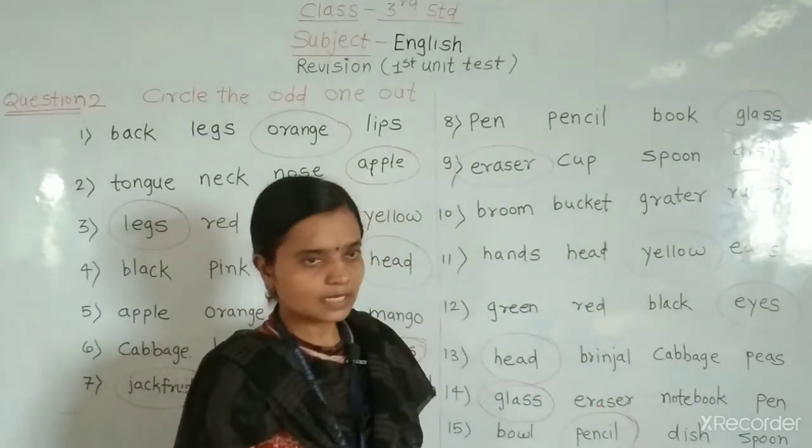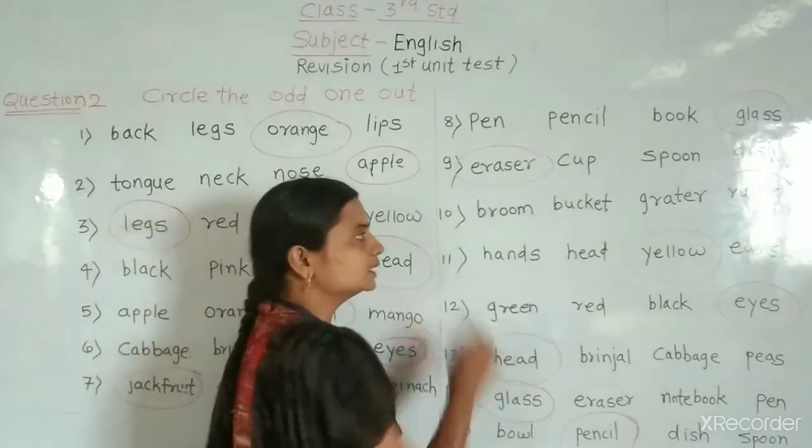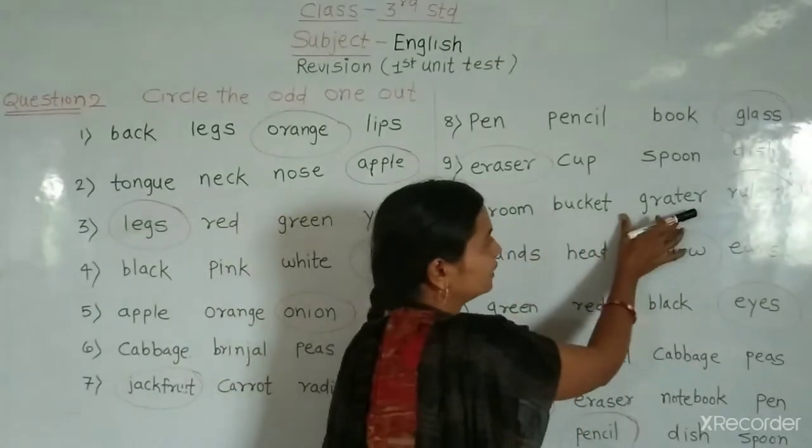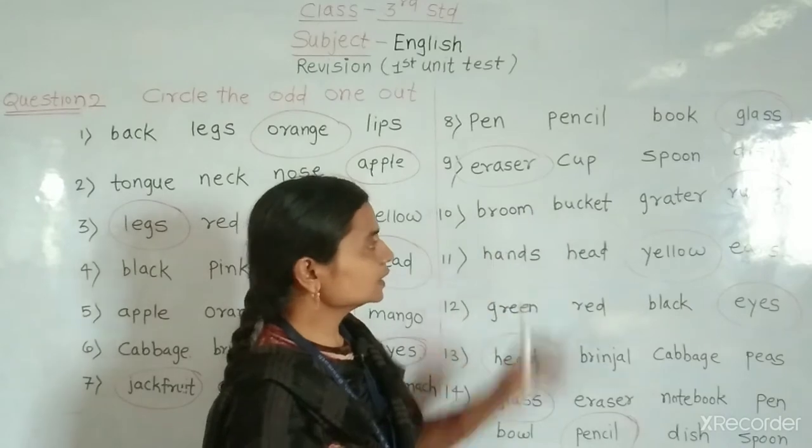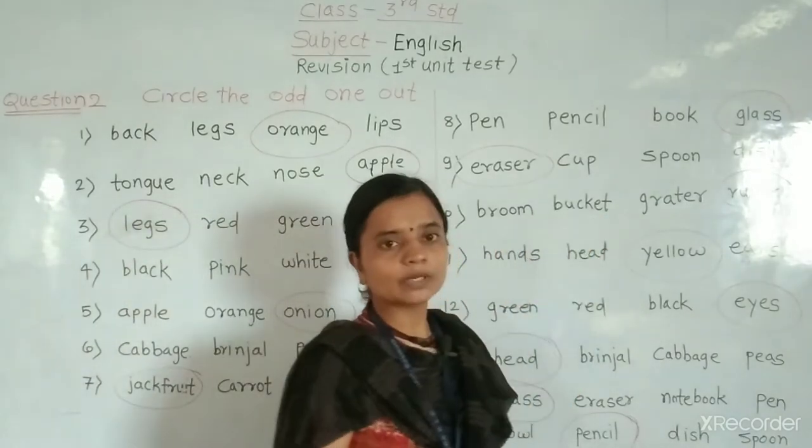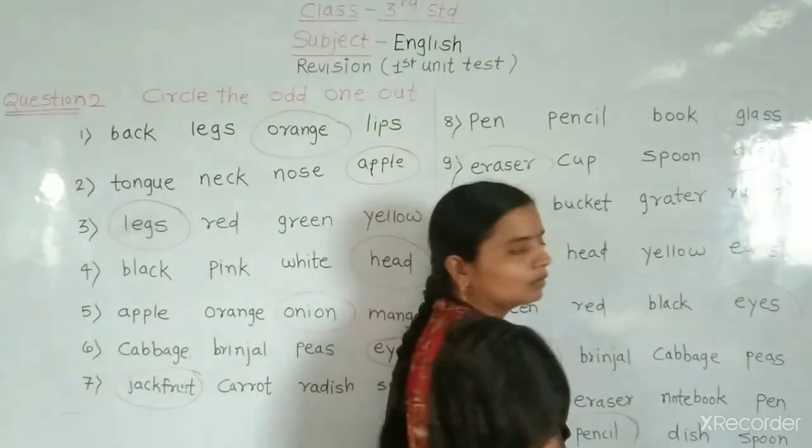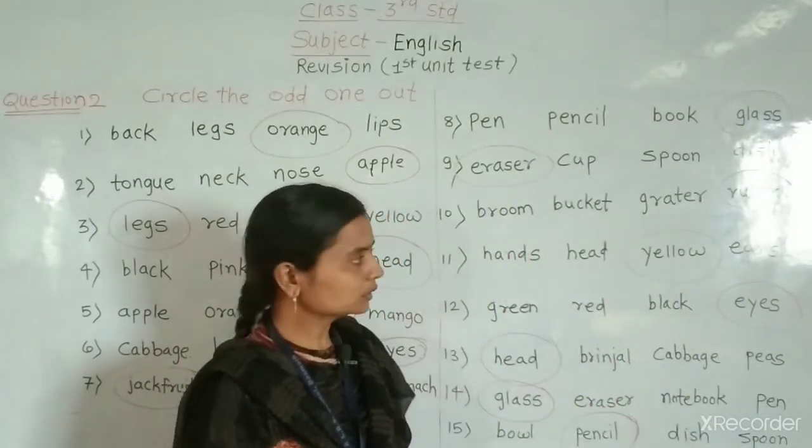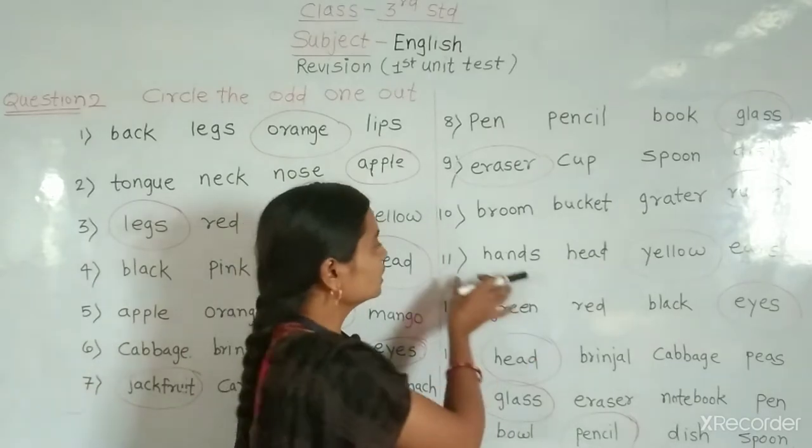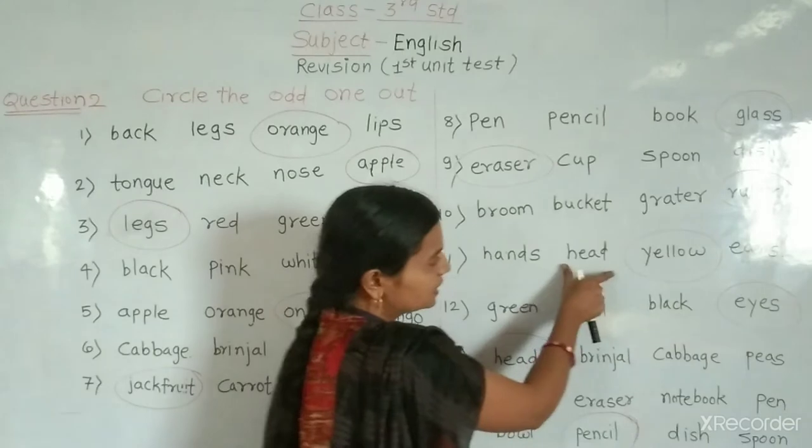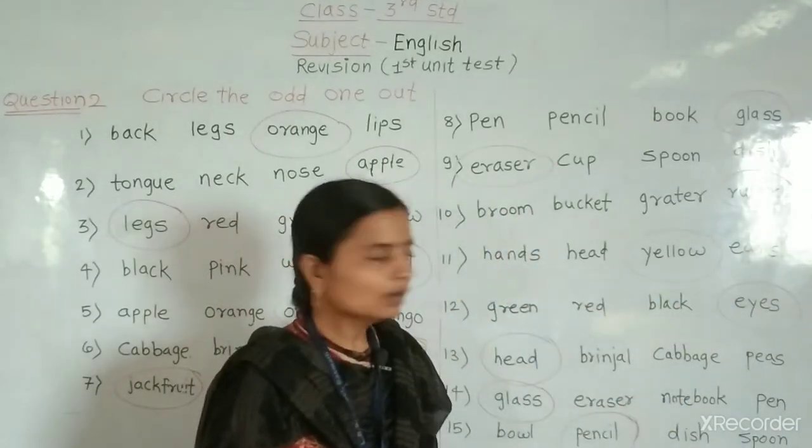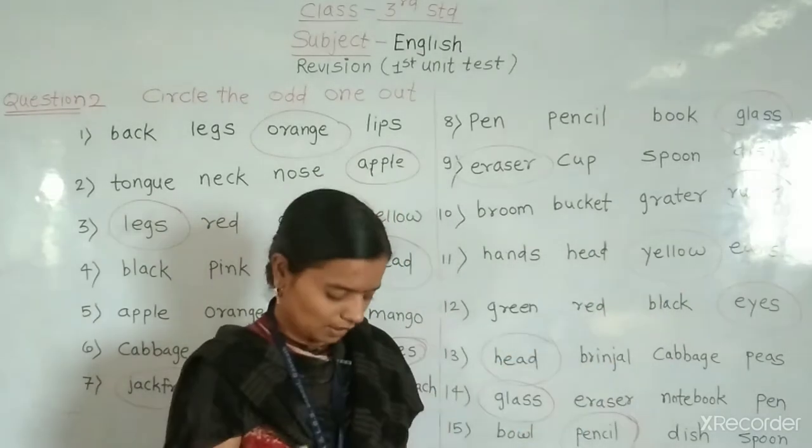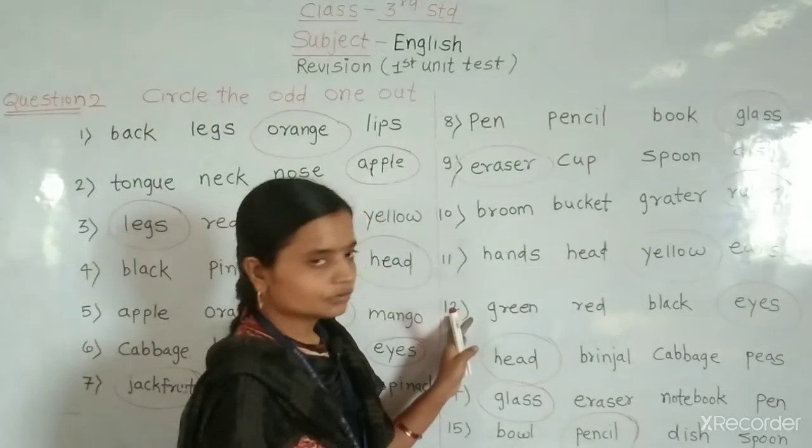Next. Broom, bucket, grater, ruler. These are the things we use in our homes. Ruler, ruler is the odd one word.